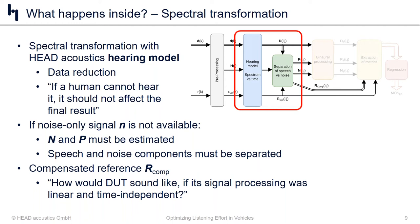If we do not have the noise-only reference — that helper signal — then we have to do some estimation later on, which is why having an accurate measurement is certainly better than estimating. The final step in this phase is creating a compensated reference signal, which replicates what the device would sound like if its signal processing is completely linear and time-independent, with no other degradations like noise present.